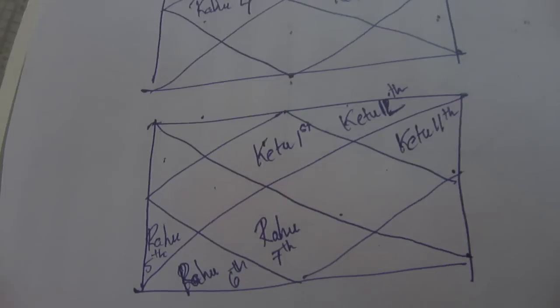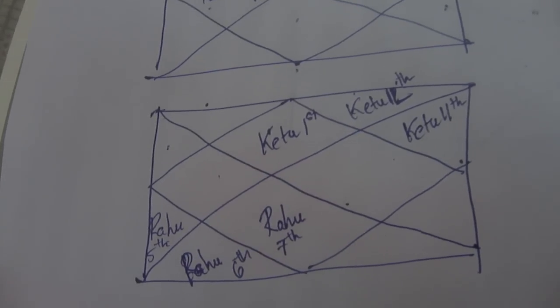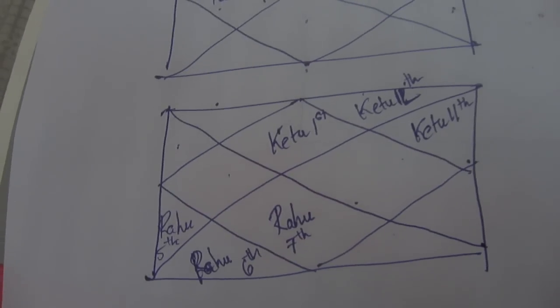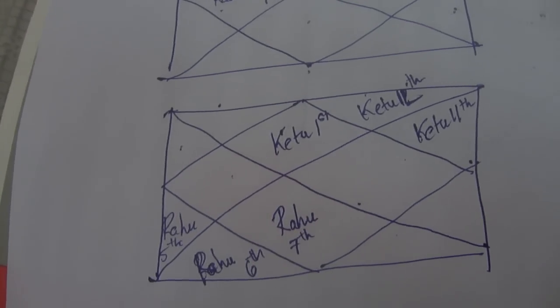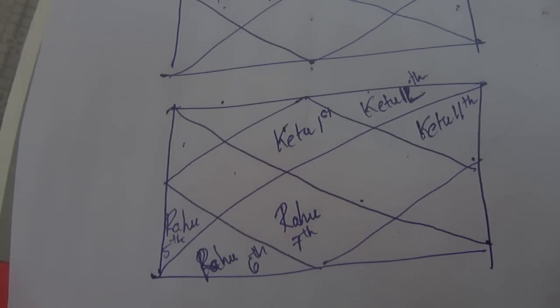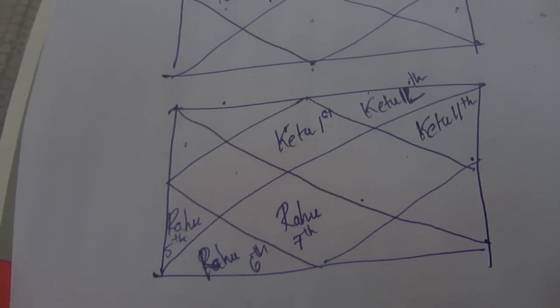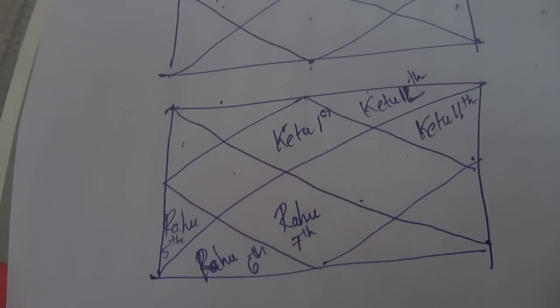So we have done till the 7 combinations and then we'll continue tomorrow with the 8th, 9th, 10th, 11th and 12th placements. And hopefully you got the basics. We'll also try to go even in more detailing of such placements because such placements itself can reveal about 60 to 70% of your life itself because Rahu and Ketu play a significant role in shaping your destiny.